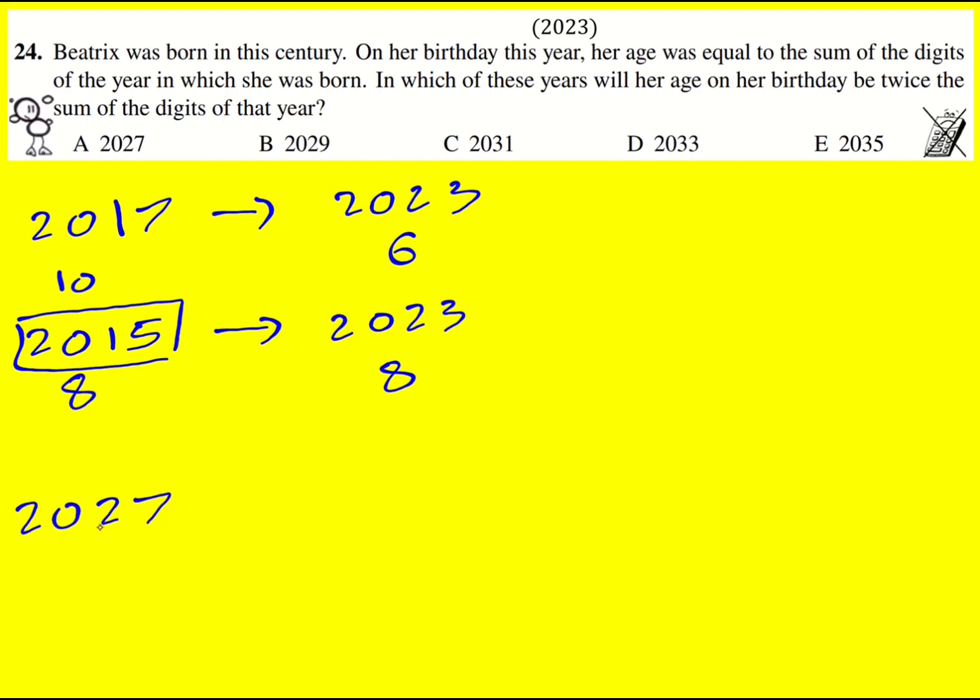So 2027, the digit sum is 11 whereas her age would be 12. So clearly that's not twice 11, so I can rule that one out and then just carry it on this way really.